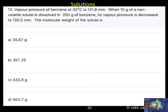Vapour pressure of benzene at 30 degrees is 121.8 mm. When 15 grams of a non-volatile solute is dissolved in 250 grams of benzene, its vapour pressure is decreased to 120.2 mm. The molecular weight of the solute is.